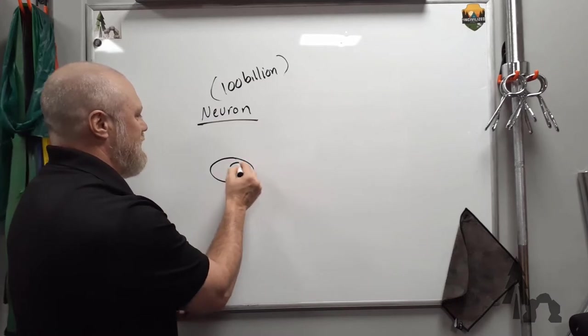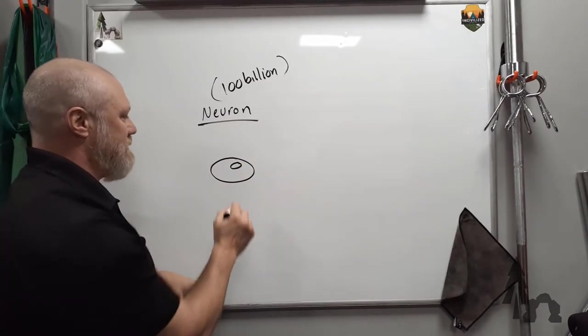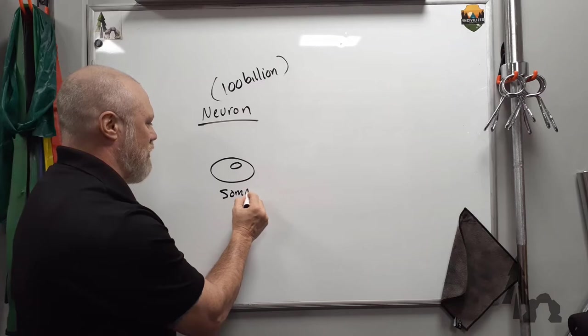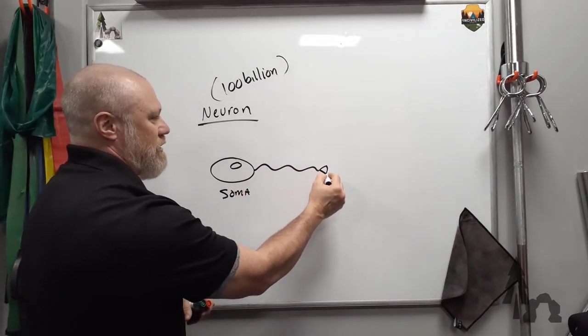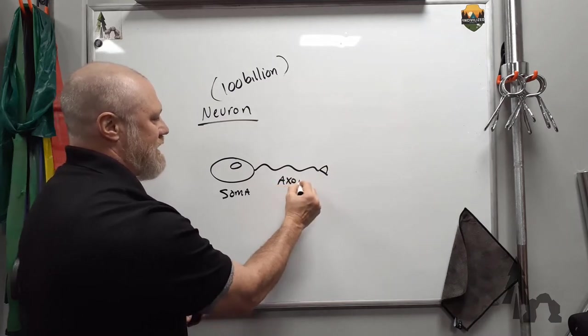But mostly, keeping it real simple, you have a cell body. The cell body is called the soma. The soma is going to have one rather large projection that comes out. This is called an axon.